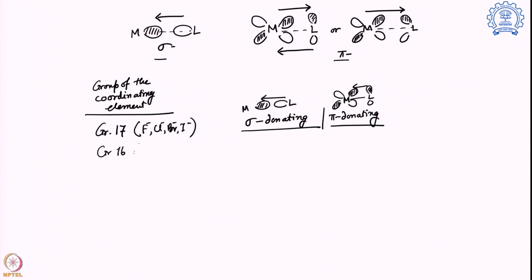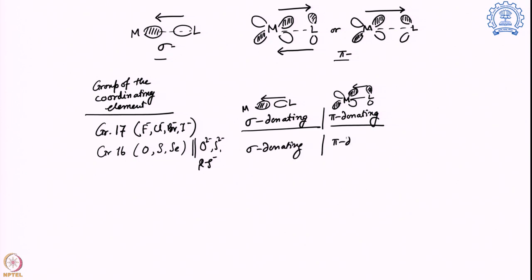Then comes group 16 — typically oxygen, sulfur, selenium. In the form of oxide, sulfide, or thiolate, these are also sigma donating and pi donating systems. This happens because the electrons come from the ligand to the metal side, and the ligand has a lot of electron density in the form of oxides, sulfides, or thiols. So group 16 and 17 are quite similar.